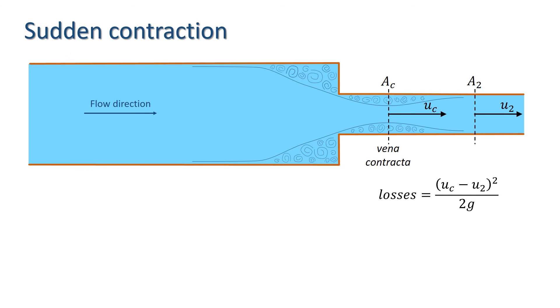We know from continuity that Q equals UC AC and that that also equals U2A2. And that gives us an expression for UC in terms of U2 and the areas A2 and AC. The coefficient of contraction CC is defined as the ratio of AC to A2. So we can write UC in terms of U2 and the coefficient of contraction.